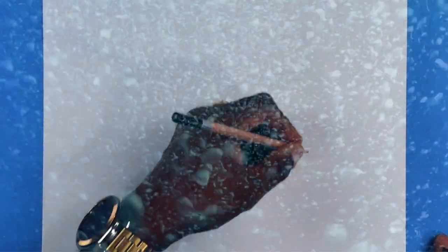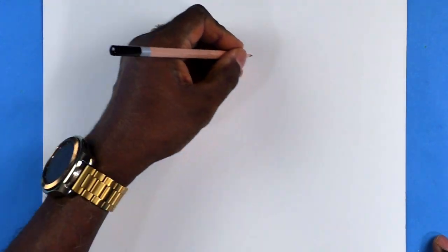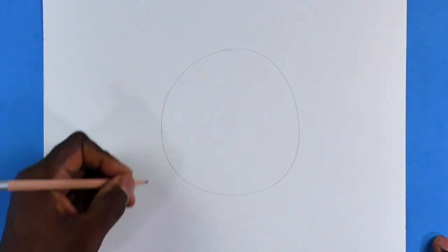Now get your pencil and paper and let's get ready to draw a clumsy crab. Let's draw a circle. Go round and round and round until you can see the circle appear.